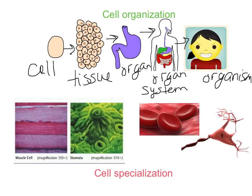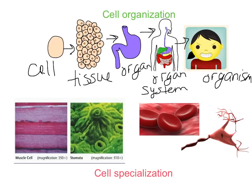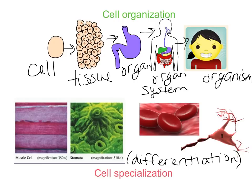Cells also have the ability to differentiate or specialize. Here we have a variety of different types of cells — they all have the same basic characteristics of living things, but they've specialized to do different kinds of tasks. A muscle cell, for instance, is very long with striations that allow it to contract and help you move. Stomata on plant cells — the hole in the middle — regulate how water goes in and out of a plant.